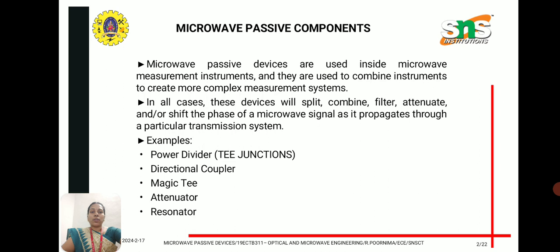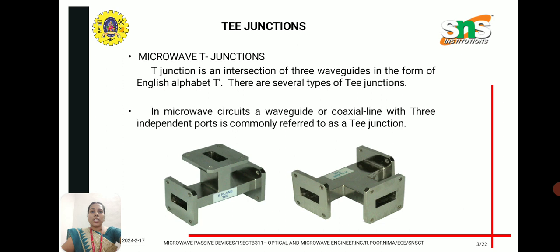Examples of microwave passive components include power dividers, RT junctions, directional couplers, magic-T, attenuators, and resonators. In today's class we are going to discuss T-junctions. A microwave T-junction is an intersection of three waveguides in the form of the English alphabet T.